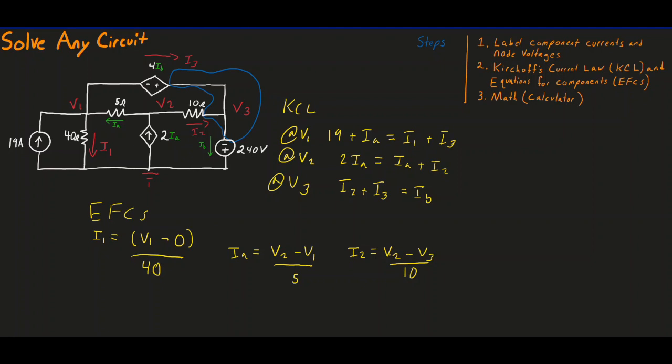So now let's move on to our voltage sources. We'll begin with 4IB, our dependent voltage source over here. For any voltage source, dependent or independent, the equation is always going to be the potential across it is equal to the positive side minus the negative side. So we're going to write that 4IB, potential across it, is equal to the positive side, which is node V3, minus the negative side, which is node V1.